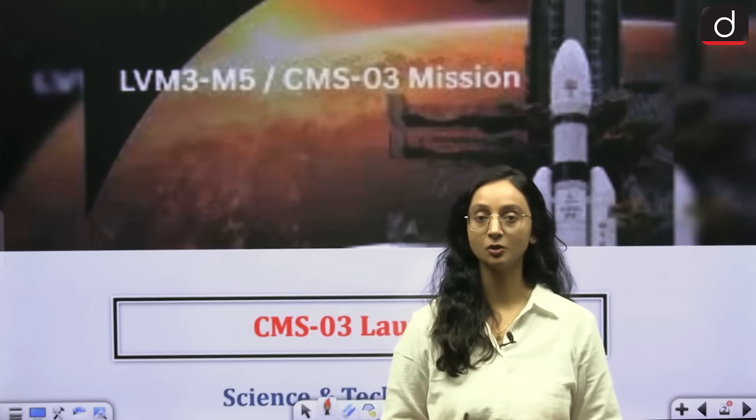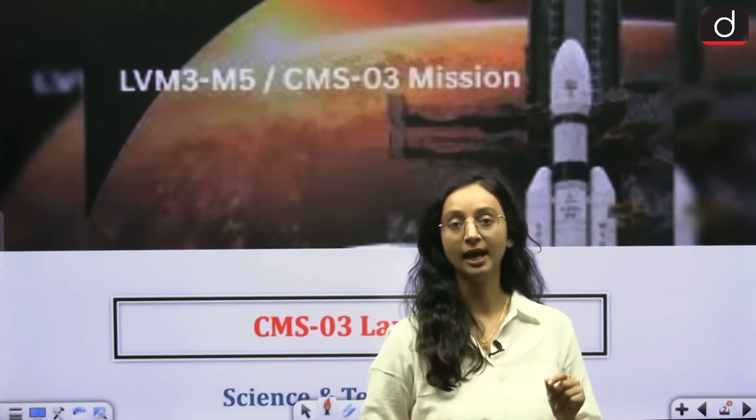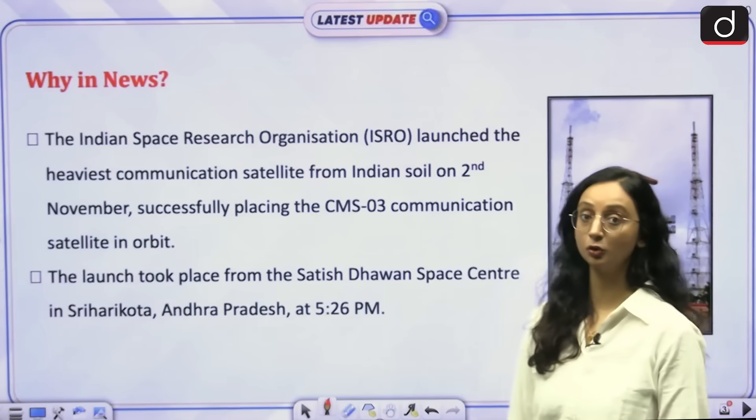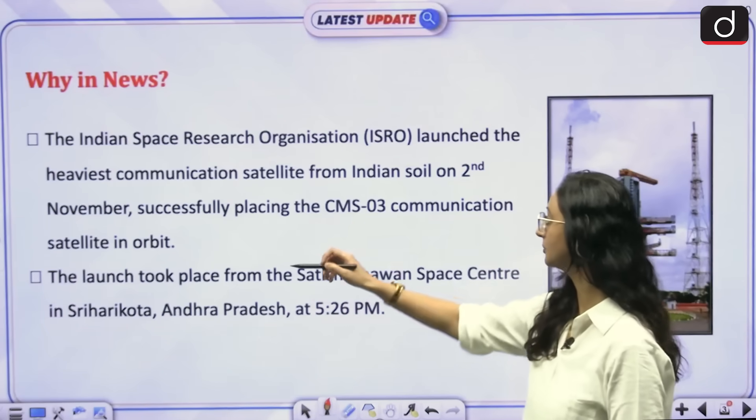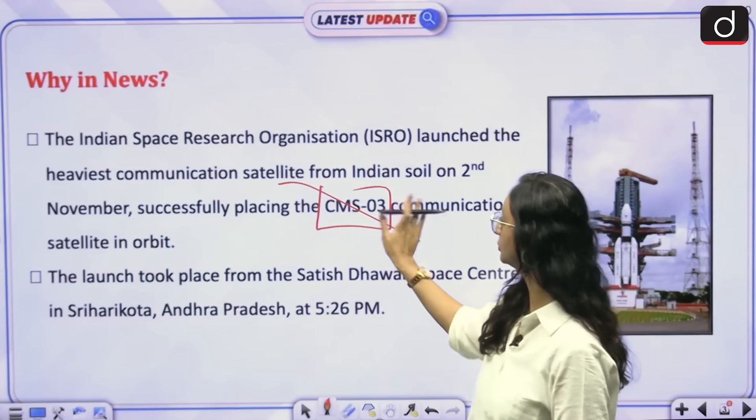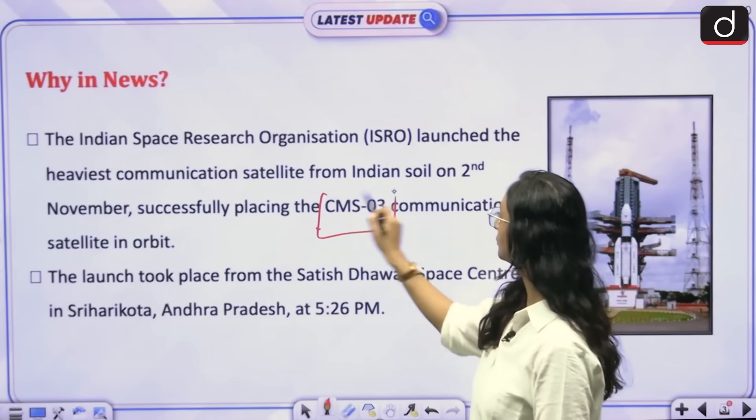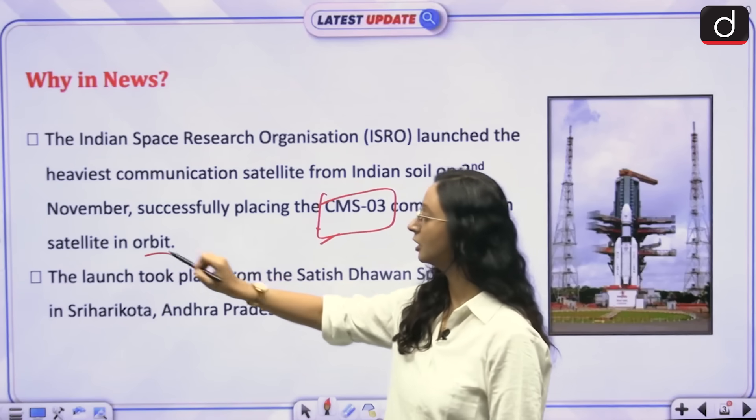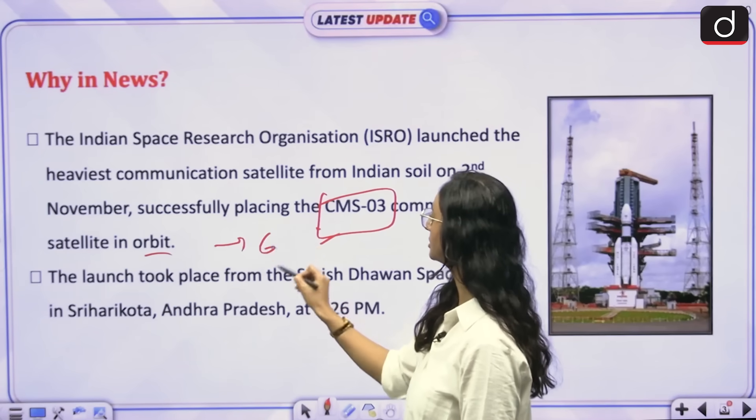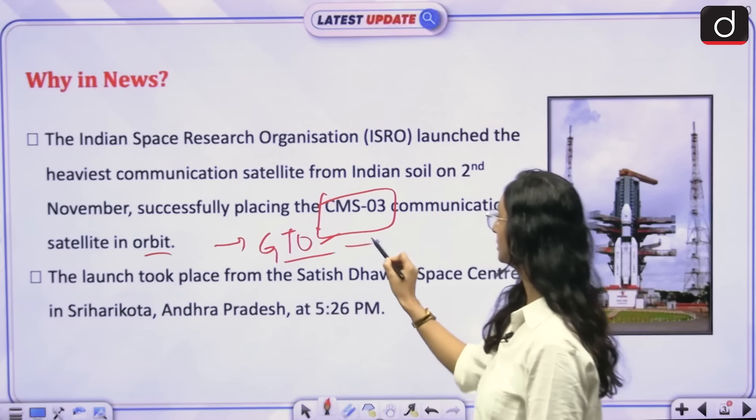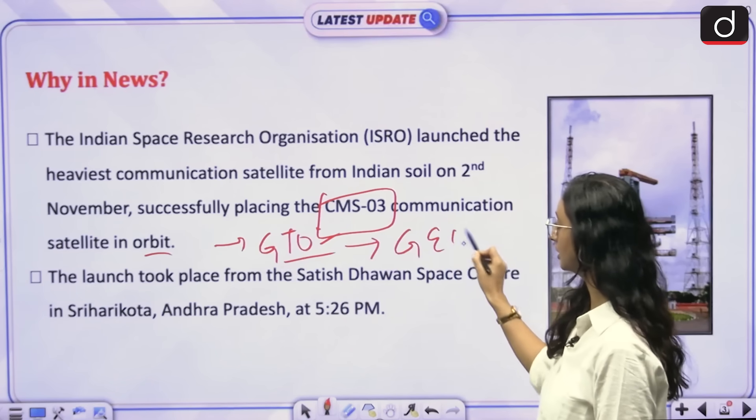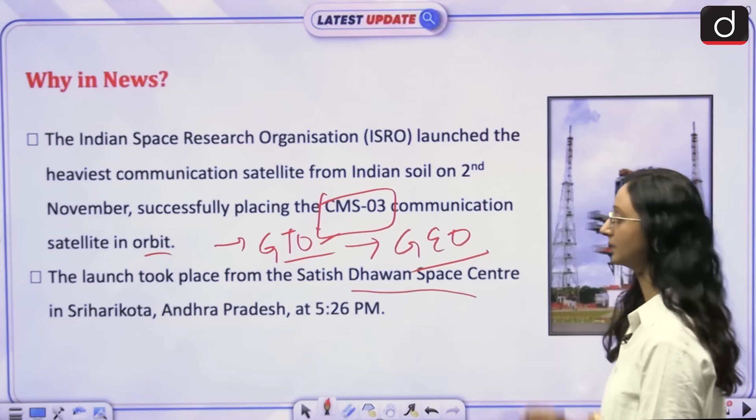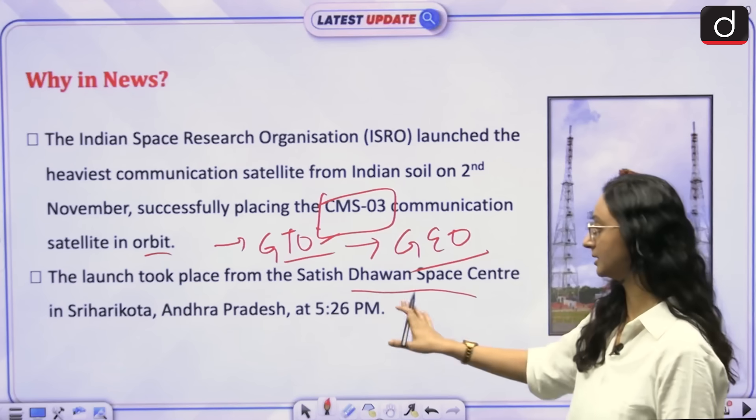So in this video, let us talk about this Bahubali launch vehicle and the CMS-03 satellite. ISRO has achieved this milestone because it launched the heaviest communication satellite, the CMS-03, from Indian soil on 2nd November and placed it into orbit. Which orbit? The geosynchronous transfer orbit. From here, this will move to the geosynchronous Earth orbit. This launch took place at the Satish Dhawan Space Center in Sriharikota, Andhra Pradesh, at 5:26 PM.